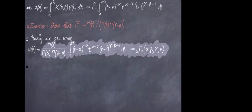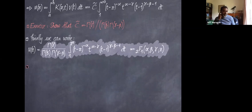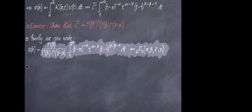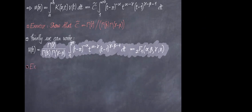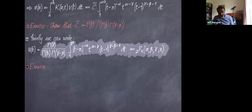Student: Just after you write u(z) equals the integral from a to b, you talked about expanding a term — was that the (t-z)^(-α) term? Instructor: Correct, yes. Student: And when you say expand, do you mean Taylor expand? Instructor: Yes. Student: Okay, cool. Instructor: So that was a hint for how to carry out the exercise.